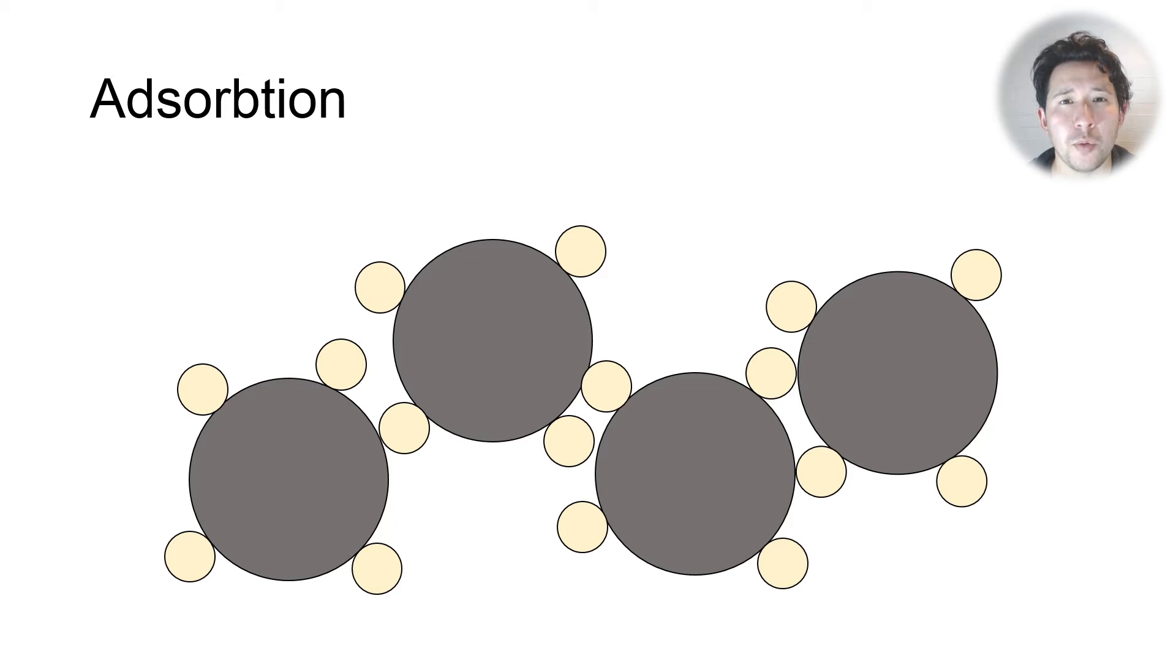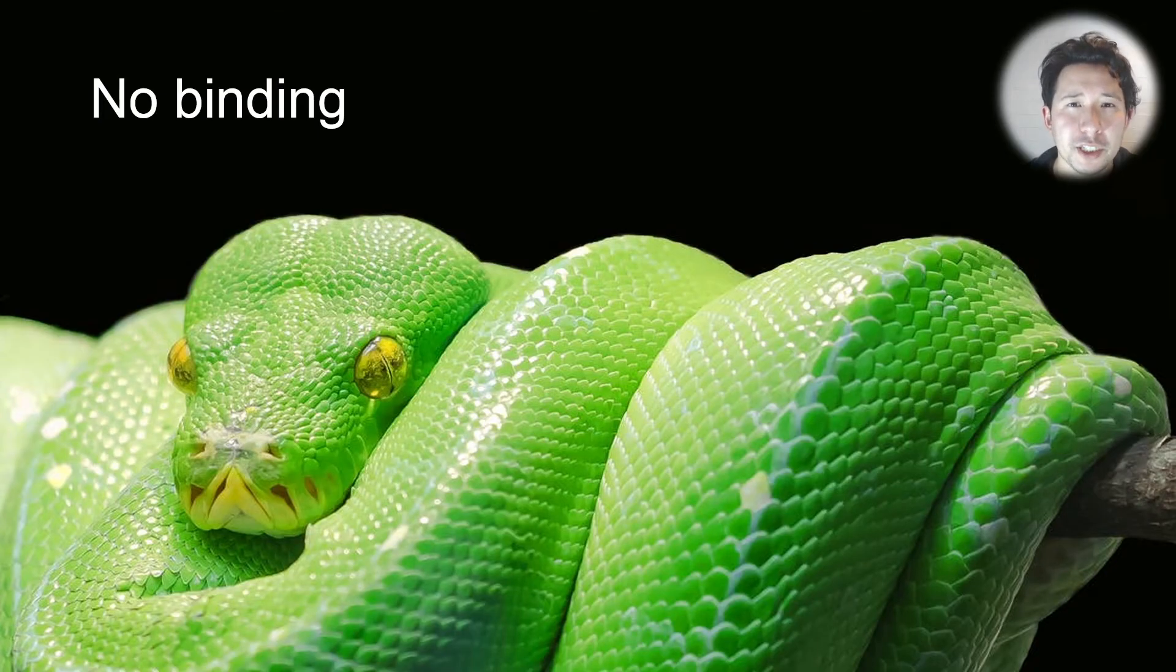It works by a process called adsorption. Adsorption means that one substance, in this case charcoal, attracts and holds substances—whether they're liquids, gases, or a dissolved solid—onto its surface and holds them there in a film. It doesn't do this by binding the other substance.